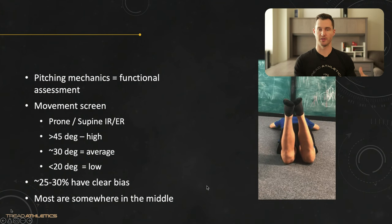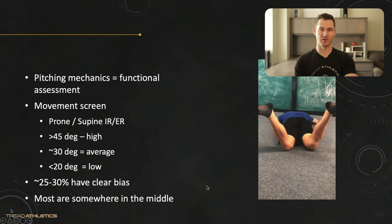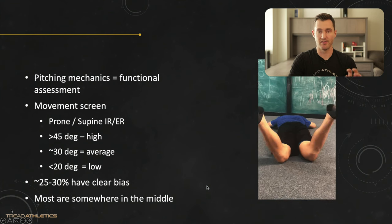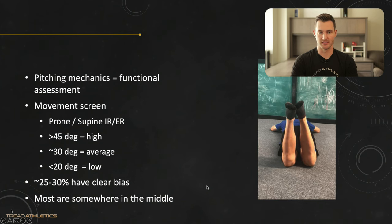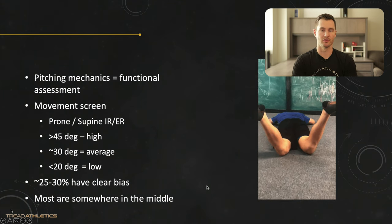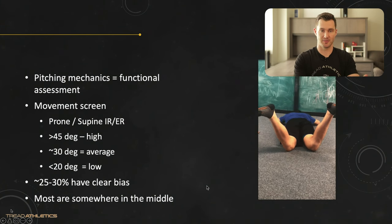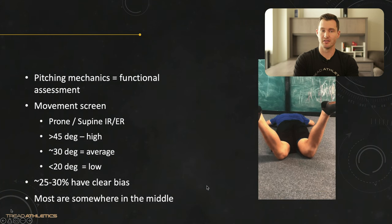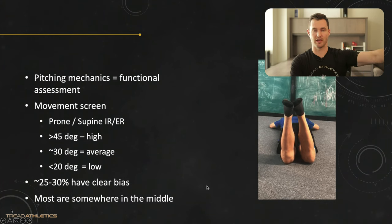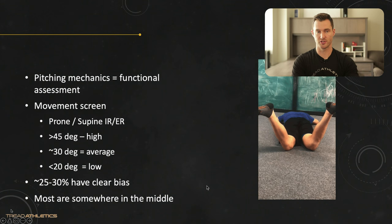Remember, this gives us clues, but we really want to pair this with how they actually move on the mound to see if things line up. A lot of people assume everyone has a clear bias in one direction — that's actually not the case. About 25 to 30 percent of athletes we assess have a clear bias: maybe 10-15 percent have a clear internal rotation bias, and 10-15 percent have a clear external rotation bias. Most are somewhere in the middle.